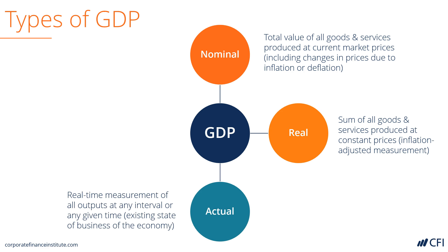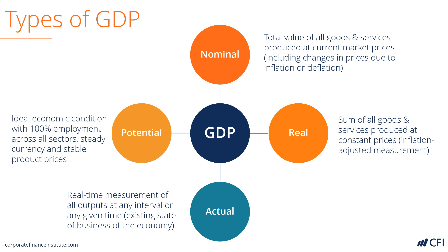Actual GDP is the real-time measurement of output at any given time in the economy, and potential GDP is the ideal economic conditions where 100% employment and production rates are at the levels they're supposed to be. And if there's a gap between actual and potential, that's the lost opportunity.